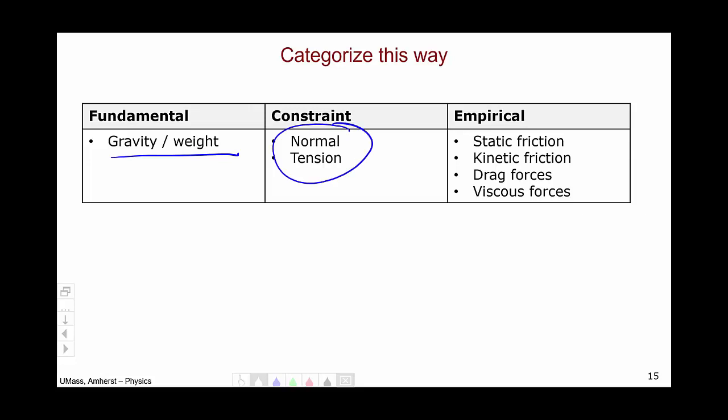From a constraint force perspective, we have two, a normal force and the tension force. Both of these forces don't have formulas for their values. Their values just take on whatever value is necessary, to satisfy Newton's second law, sum of the forces equals ma.